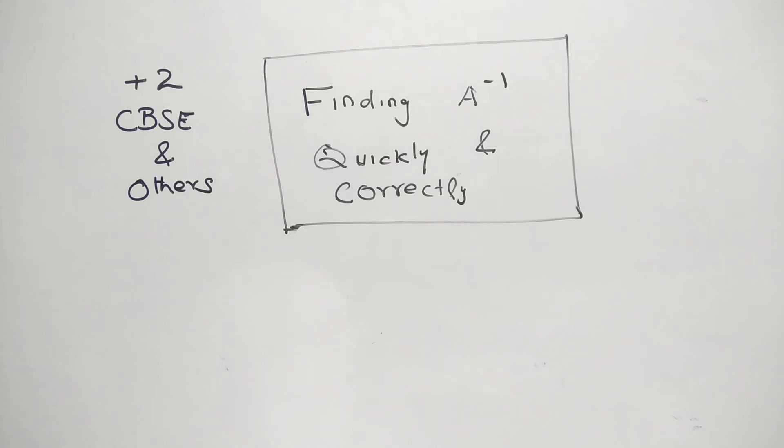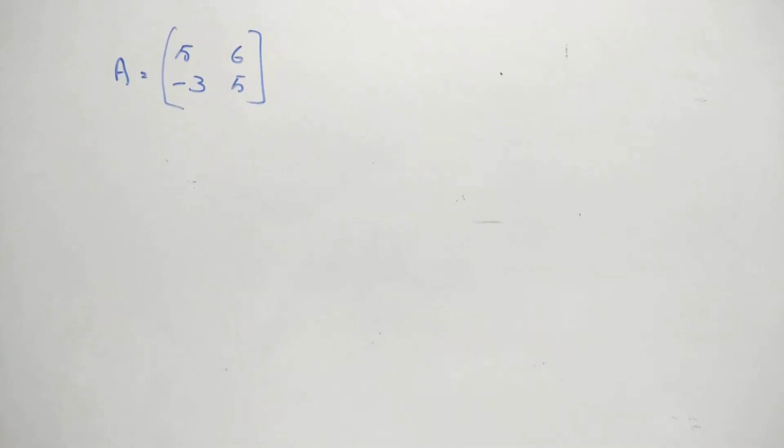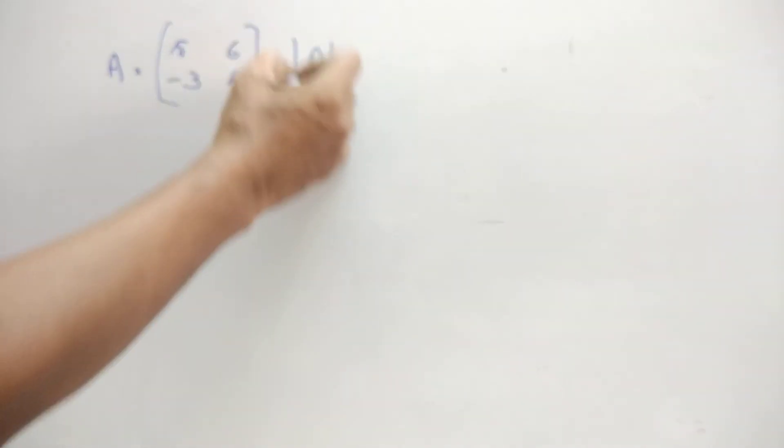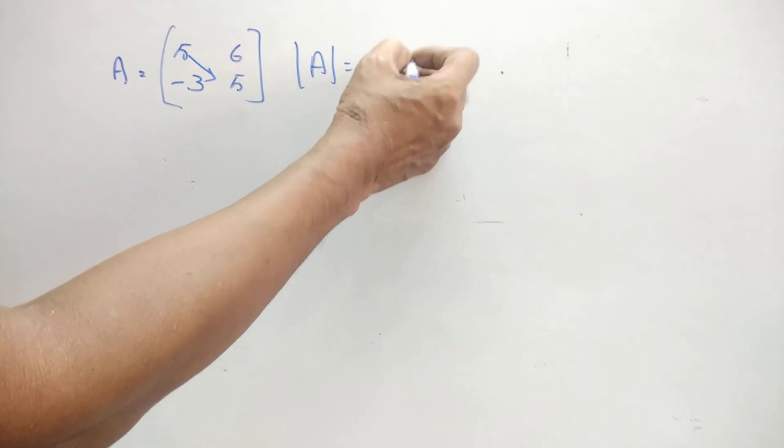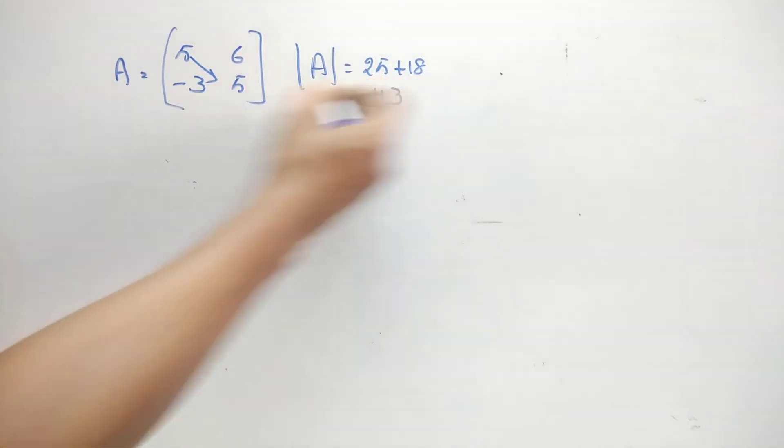For students of plus 2 CBC and others, find the A inverse quickly and correctly. That's what we are going to see today. See, A is the 2 by 2 matrix I have taken, 5, 6 or minus 3, 5. We have to find the A inverse, so get the determinant of A. That is 25 and minus, so 80, that is 43.